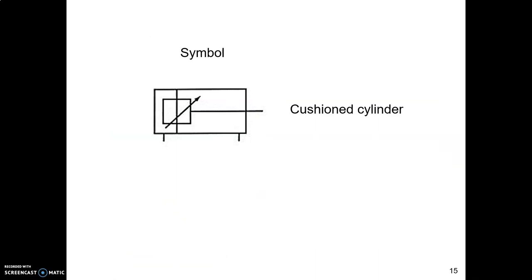Here's the symbol for a cushion cylinder. Look at that! There is that sloping arrow again, that symbol that we've seen before, that tells us something is variable. So here we might think about the speed is variable essentially, because it doesn't extend or retract the same speed all the way along.